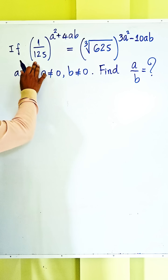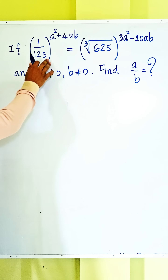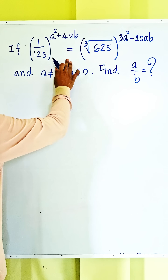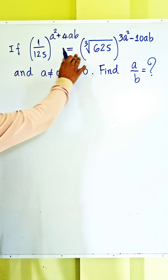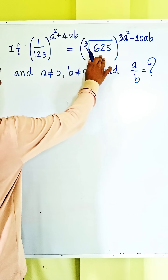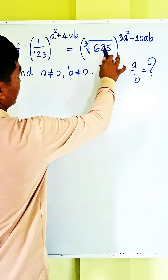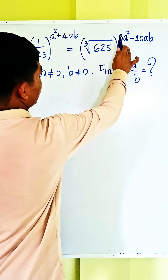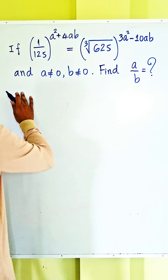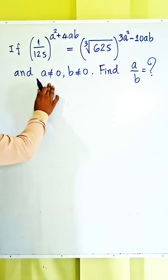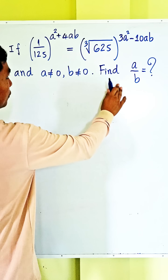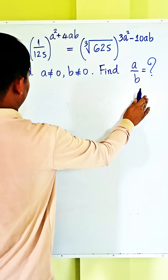If 1 divided by 125 to the power (a squared plus 4ab) equals the 6th root of 625 to the power (3a squared minus 10ab), and a is not equal to 0, b is not equal to 0, find the values of a divided by b.